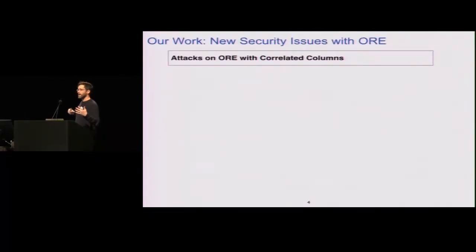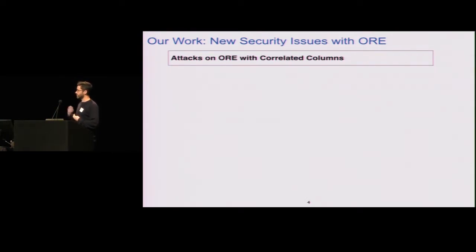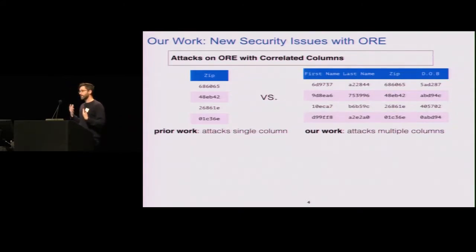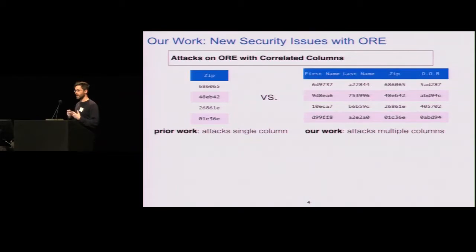This work is about looking at the security of order-revealing encryption and identifying some new conceptual, qualitative security issues that haven't been stressed in the literature or by people deploying it. Our contributions are divided into two parts. The first looks at attacks against order-revealing encryption when you have correlated columns in a table. Prior work would ask what you can learn from encryptions of a single column of zip codes, but in reality you're storing multiple columns all encrypted with order-revealing encryption, and these rows are correlated.